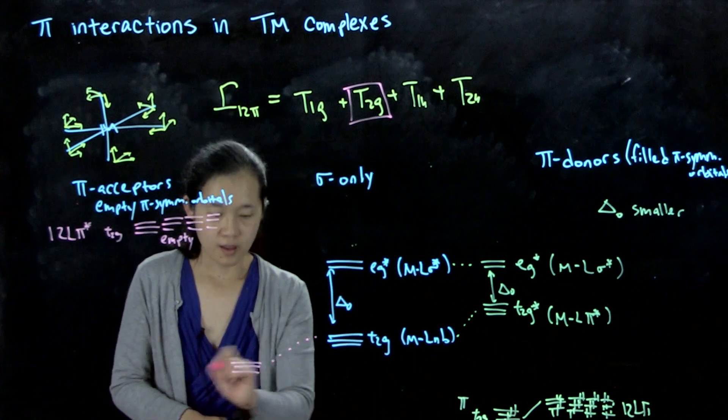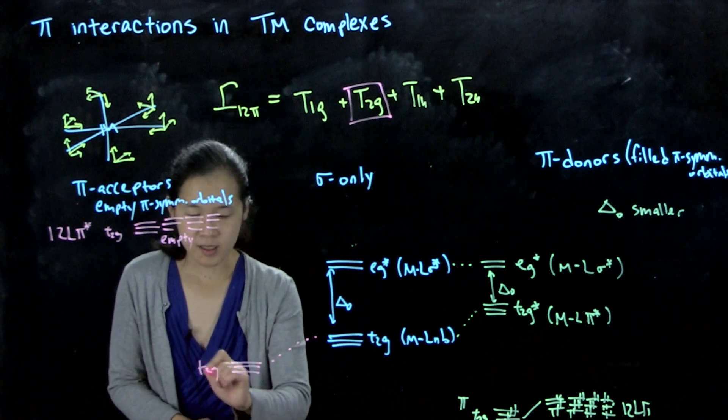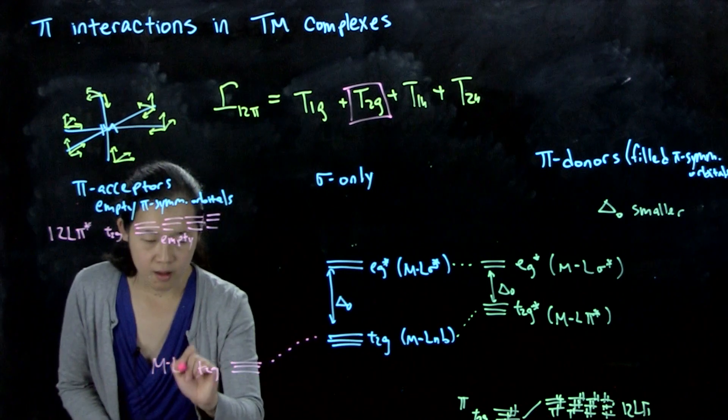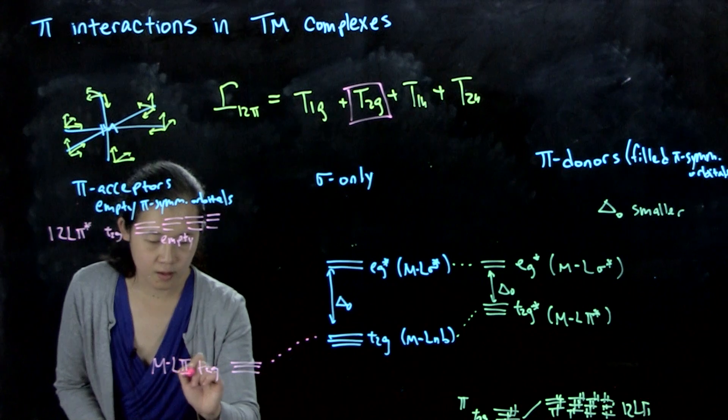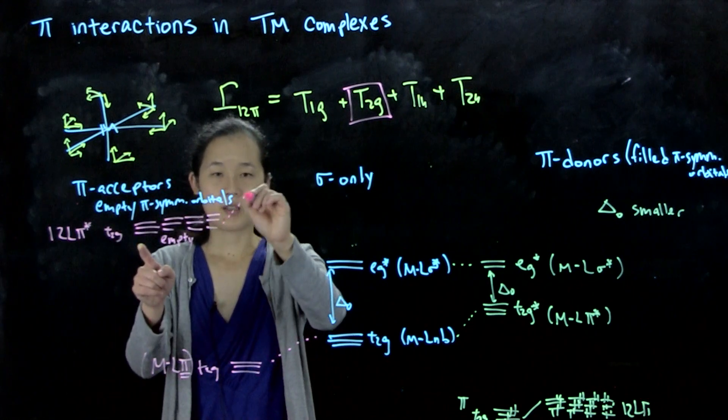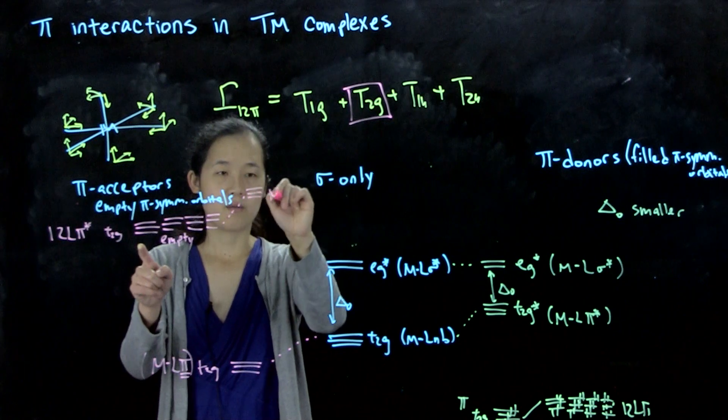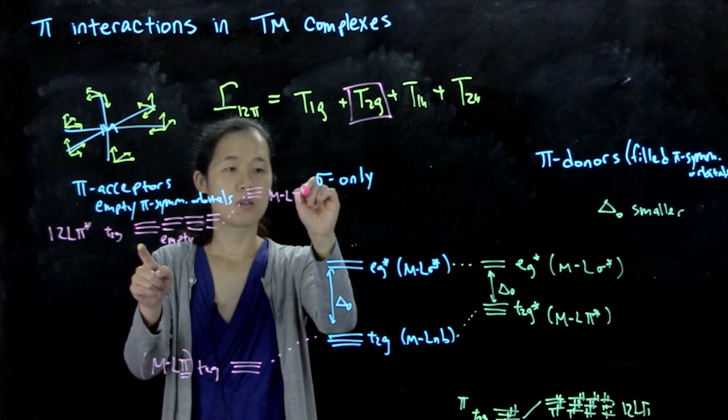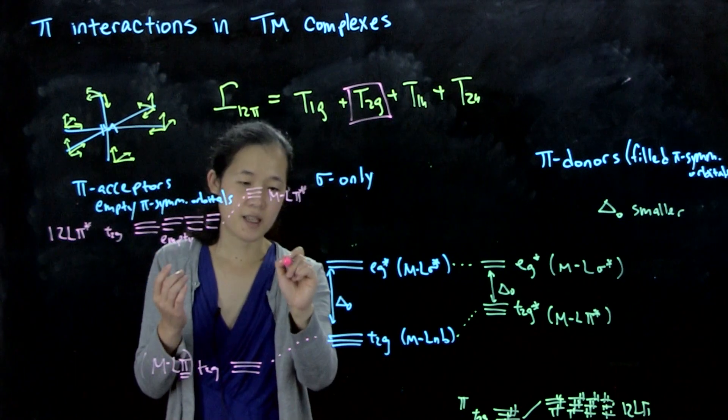This T2G becomes metal-ligand pi bonding, and then these T2G goes up. And again, the EG stays in the same energy.